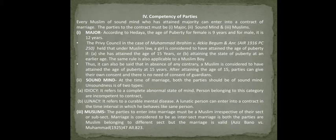Puberty refers to the time when a child's body is changing and becoming physically like an adult. For females, this age is considered to be 9 years, and for males, 12 years. In the case of Muhammad Ibrahim vs. Atkia Begum AIR 1960, it was held that under Muslim law, a girl is considered to have attained the age of puberty at 15 years if no earlier signs are evident.